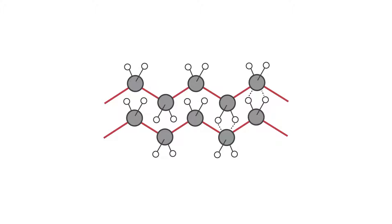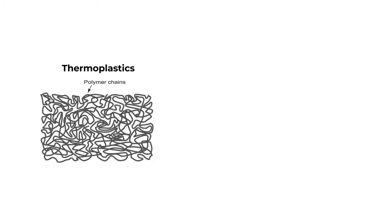Polymers we can define as long organic molecules built around a chain or backbone, often of carbon atoms. They exist in two primary categories: thermoplastics, which soften when heated and harden when cooled. An example of this is polyethylene, which makes up your milk bottles.